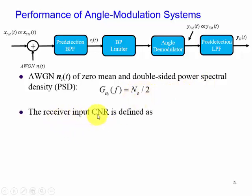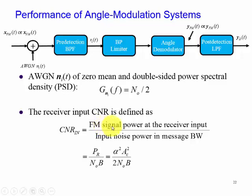The receiver input carrier-to-noise ratio is defined as the FM signal power at the receiver input divided by the input noise power in the message bandwidth.